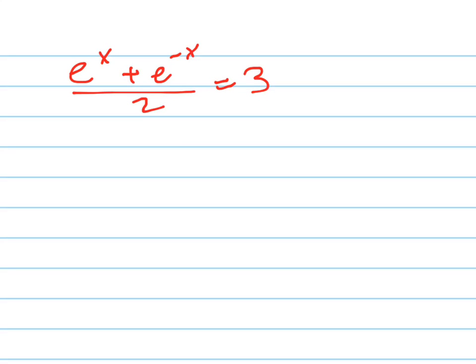Solve for x. This is kind of a funky looking problem. First I'm going to multiply both sides by 2. So e to the x plus e to the negative x equals 6.